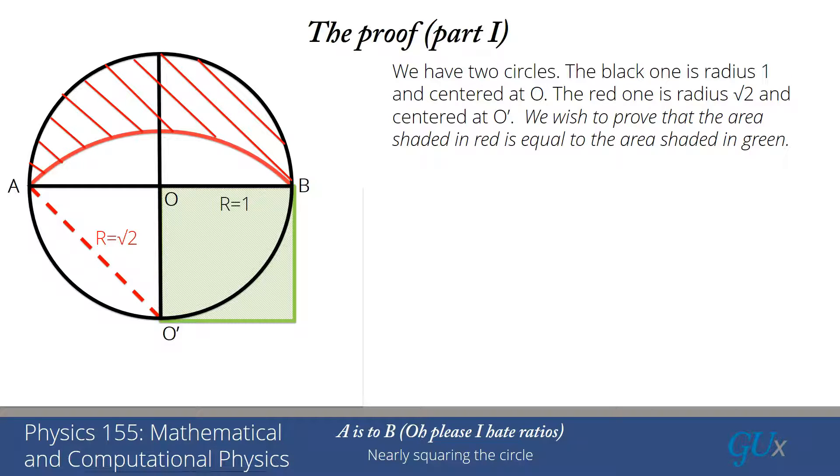Now, the green hatched area is the area of a square that has an edge equal to the size of the radius of the black circle. And the red hatched region is the area in between these two different circles. And while it looks like this might be possible that those two areas are the same, it's by no means obvious that that must be true. So that's what we're going to be proving.